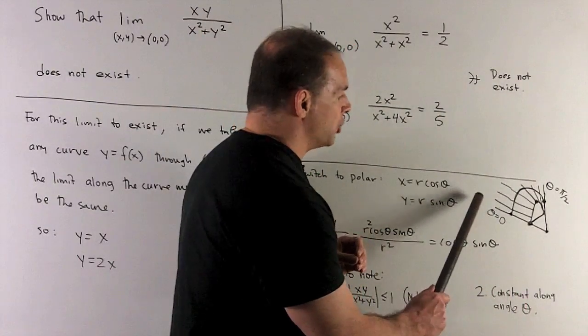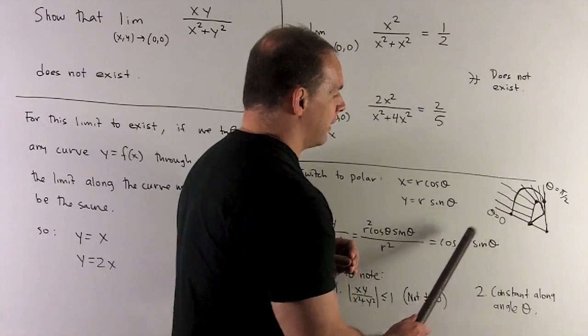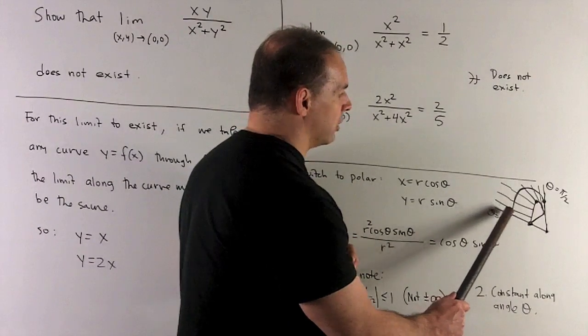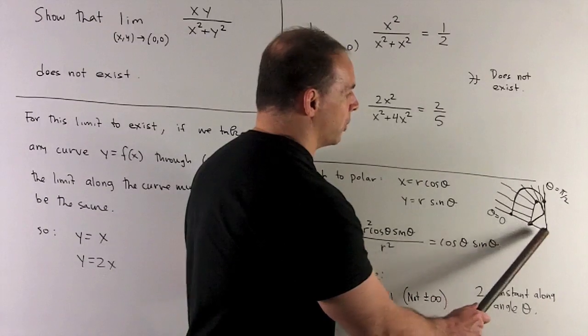So as I come along the origin at θ=0, that value's going to be 0. So this is coming in along the axis, so that wants to go to 0.